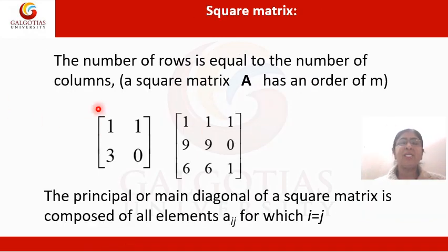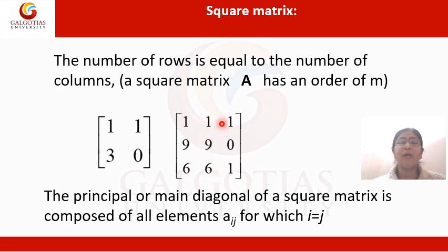Next is a square matrix. A matrix is said to be square if the number of rows is equal to the number of columns. For example, a 2x2 matrix has 2 rows and 2 columns, and a 3x3 matrix has 3 rows and 3 columns. If the number of rows equals the number of columns, it is said to be a square matrix. For a matrix A_ij, if i equals j, it is said to be a square matrix.